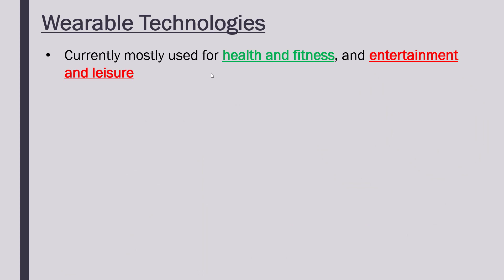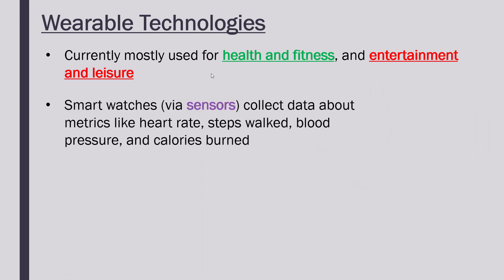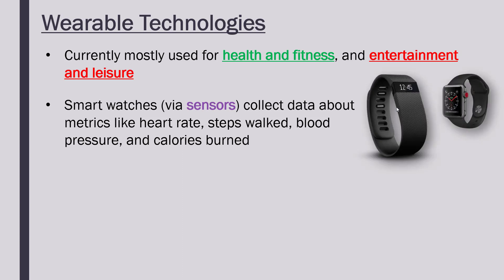At the moment, wearable technology is mostly limited to things like smart watches. Currently they're mostly used for health and fitness, and also entertainment and leisure — for example, Apple Watches can be used to reply to messages or answer phone calls. Via their built-in sensors, smart watches collect data about things like heart rate, number of steps walked, blood pressure, and how many calories you've burnt while exercising.